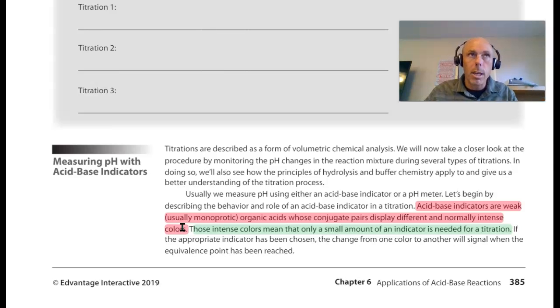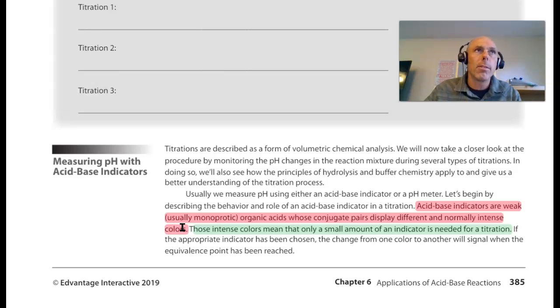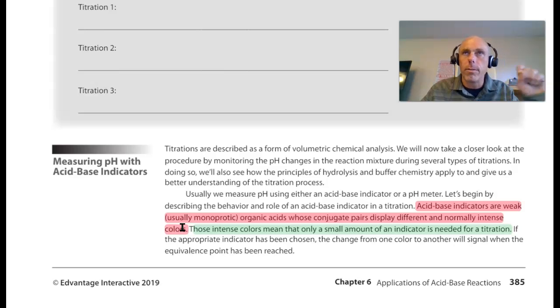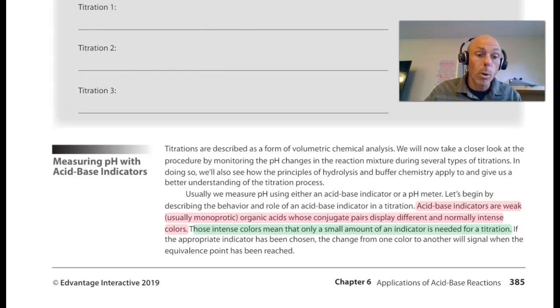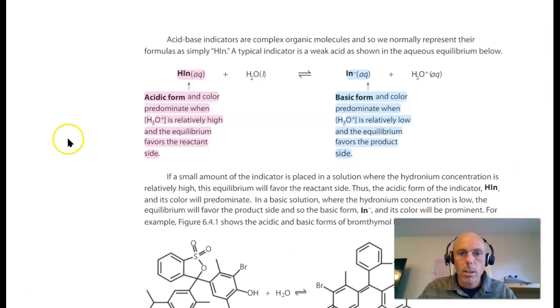Because those colors are so intense for indicators — they're deliberately picked — only a very few drops of an indicator is typically needed for its color to be detectable and to help us know where the equivalence point or endpoint of a titration is.